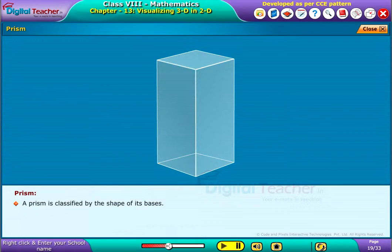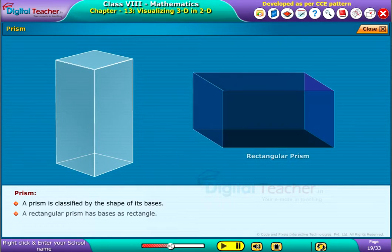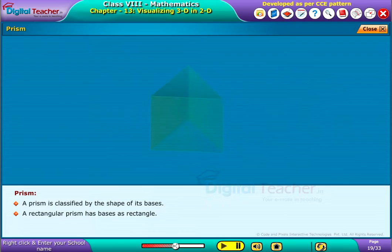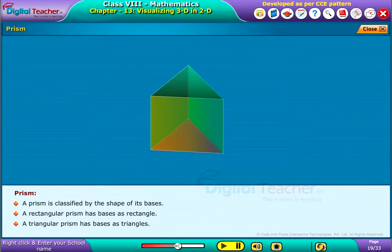A rectangular prism has bases as rectangles. A triangular prism has bases as triangles.